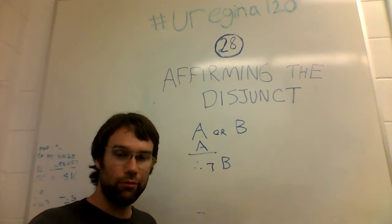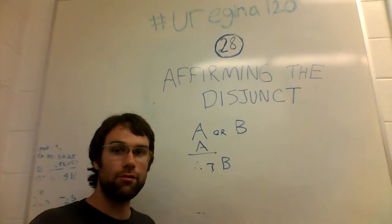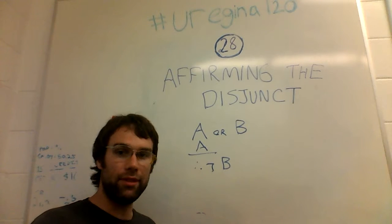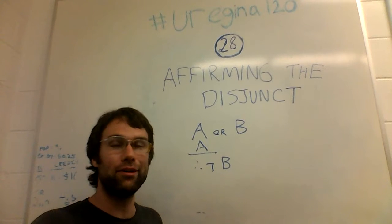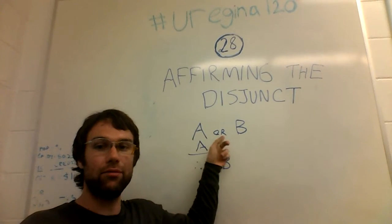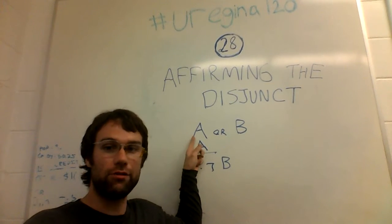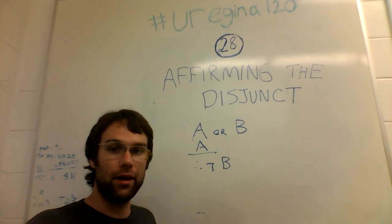But when speaking in a precise way, you can either mean that or both of them, or inclusive or, where A and B, or just A, or just B can be true.